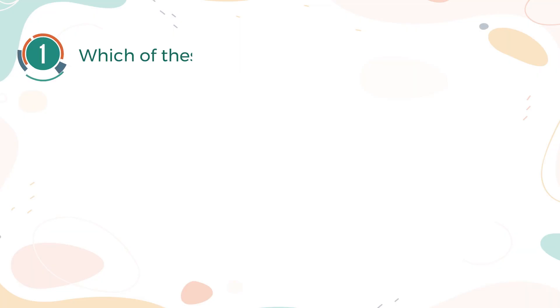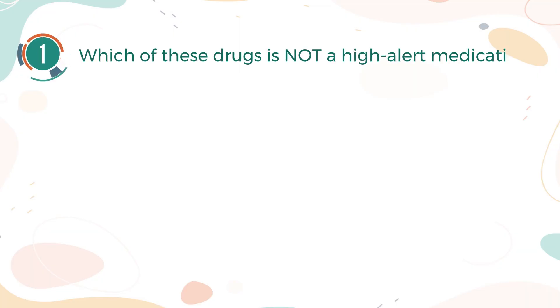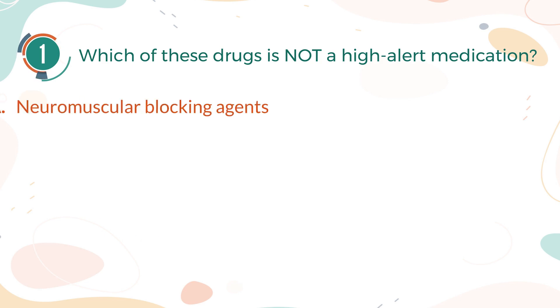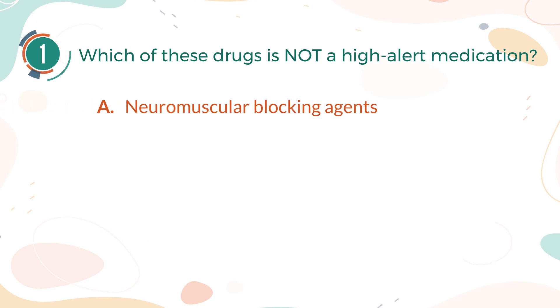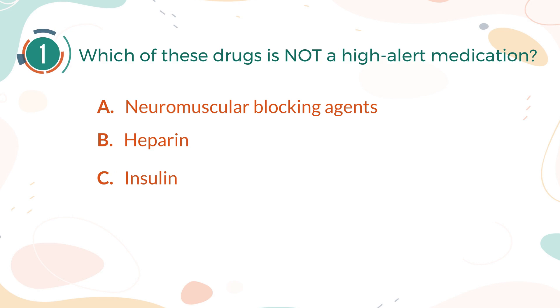Number 1. Which of these drugs is not a high-alert medication? A. Neuromuscular Blocking Agents. B. Heparin. C. Insulin. D. Penicillin.